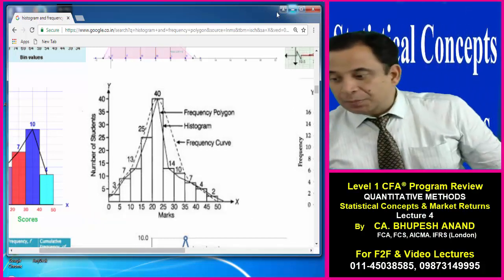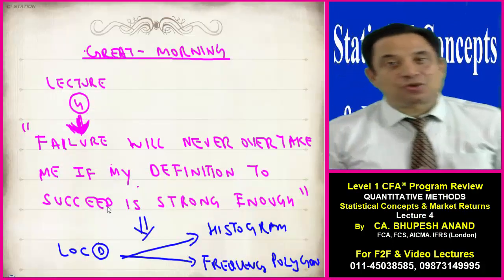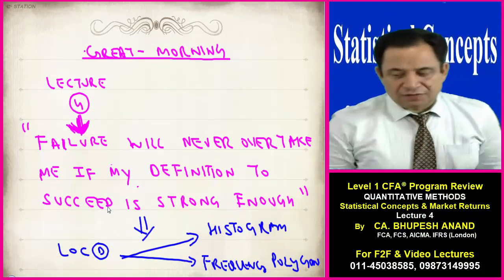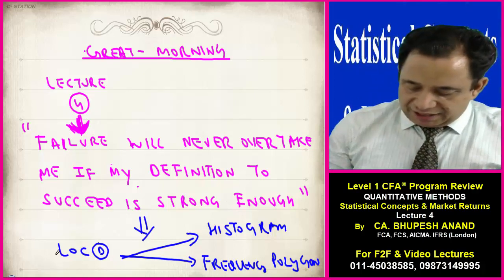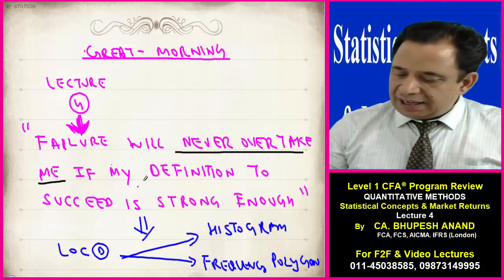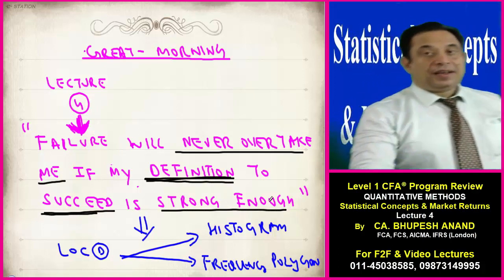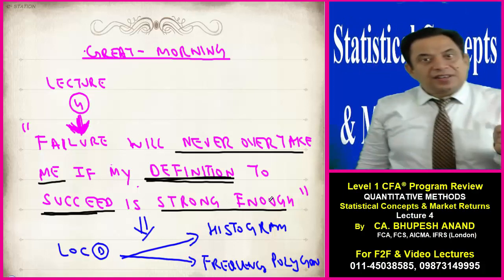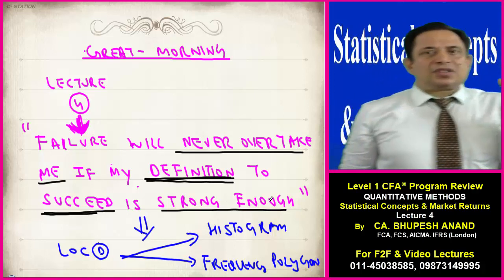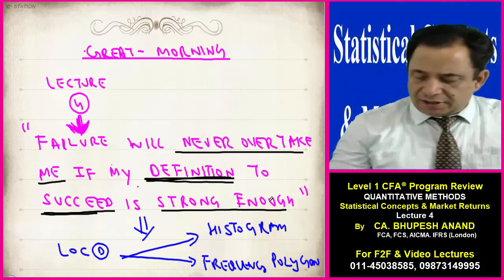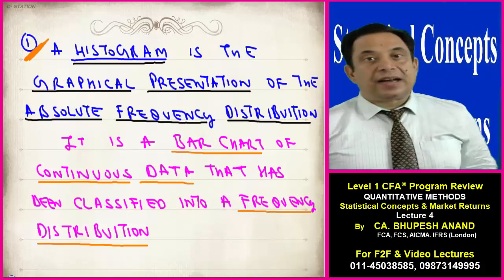We have to start with frequency polygon. Please take out your registers, because we have to start with lecture number 4. I have written a quotation for you: 'Failure will never overtake me if my determination to succeed is strong enough.' If my determination is to succeed in the first attempt in CFL Level 1 examination, then failure has no meaning at all. In lecture number 4, we will be discussing learning outcome number D — two points: histogram and frequency polygon.